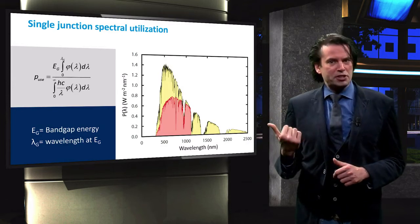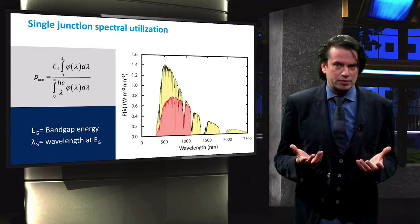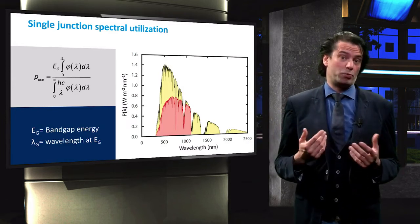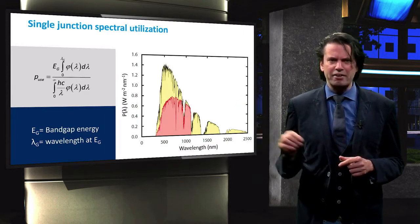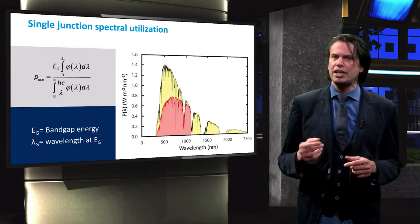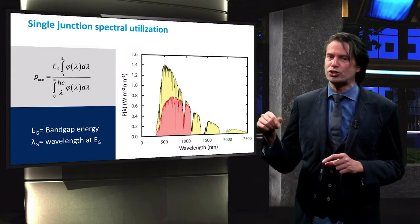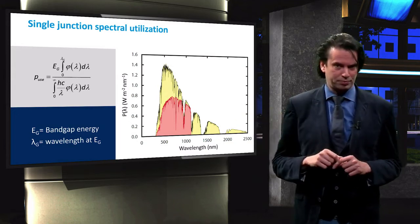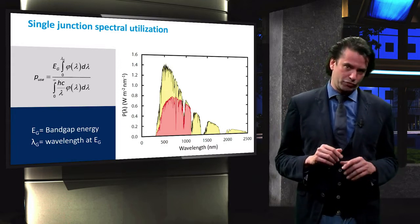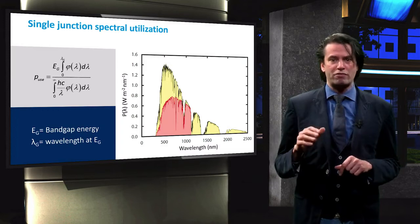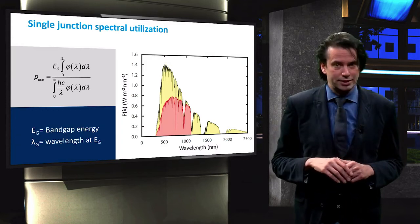This figure gives an impression of the usable fraction. The spectral irradiance of the AM 1.5 spectrum is illustrated by the yellow area. The red area illustrates the fraction of energy that can be used by a single junction crystalline silicon solar cell. Such a solar cell has a band gap of 1.12 eV, which corresponds to a wavelength of roughly 1100 nm.